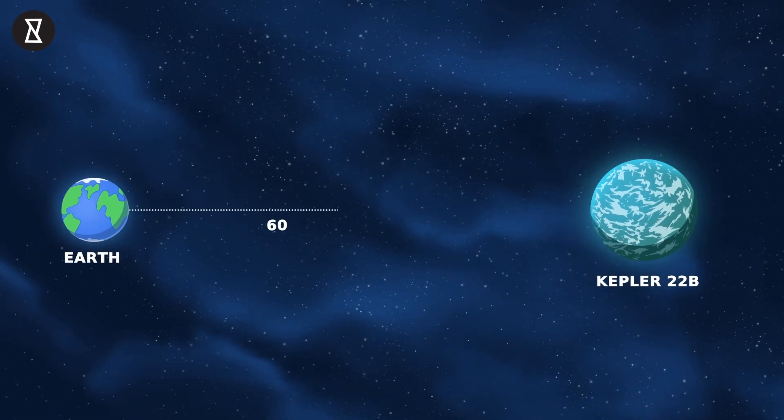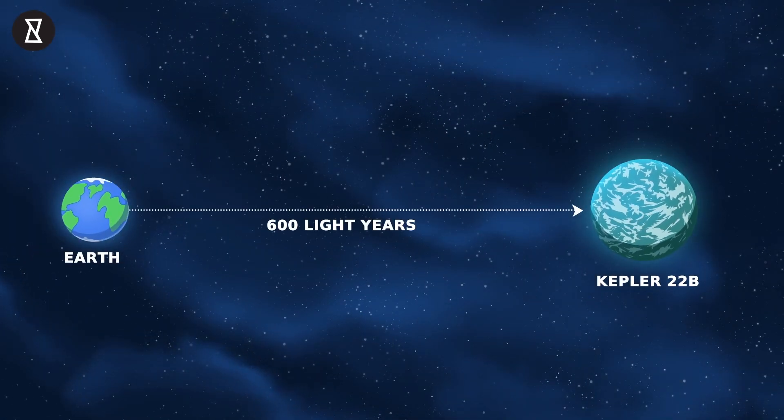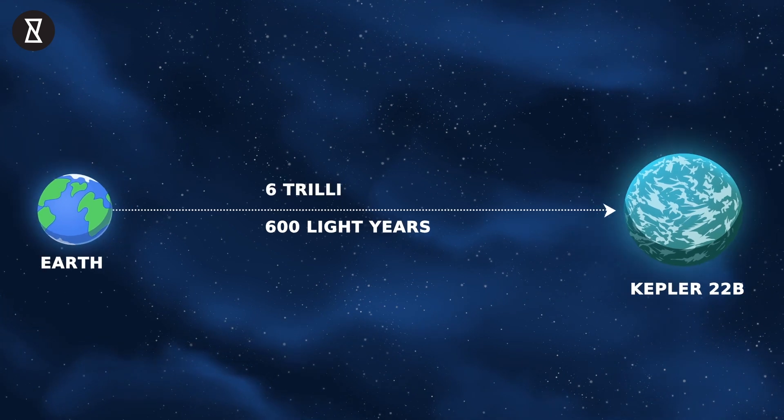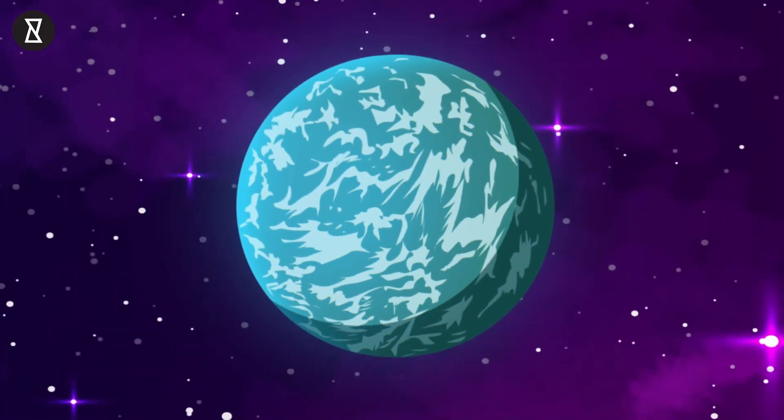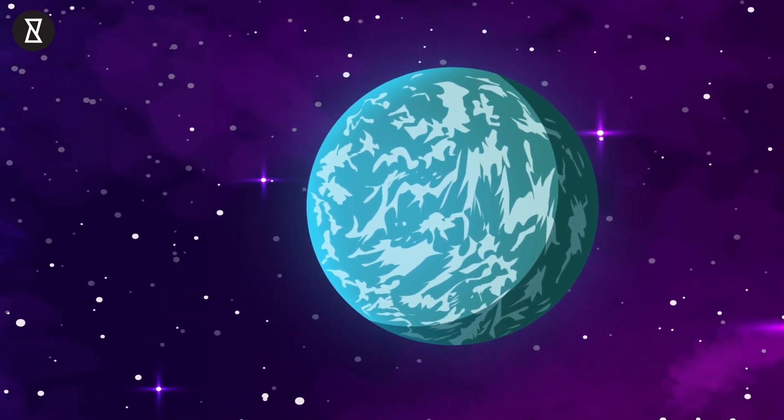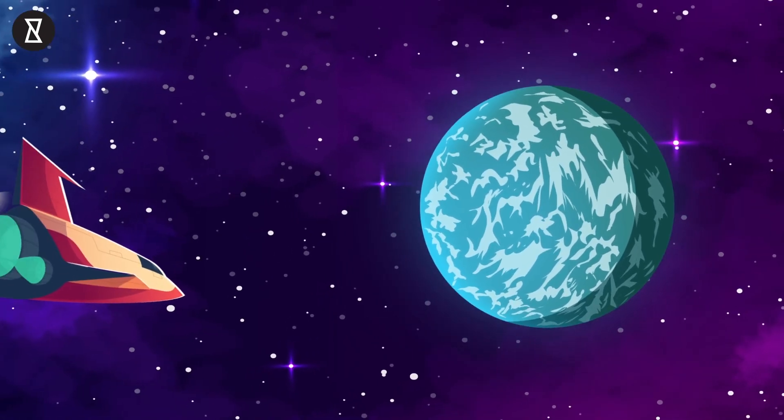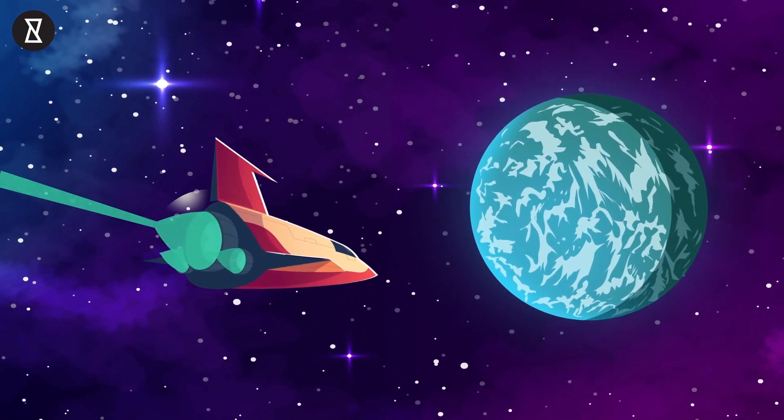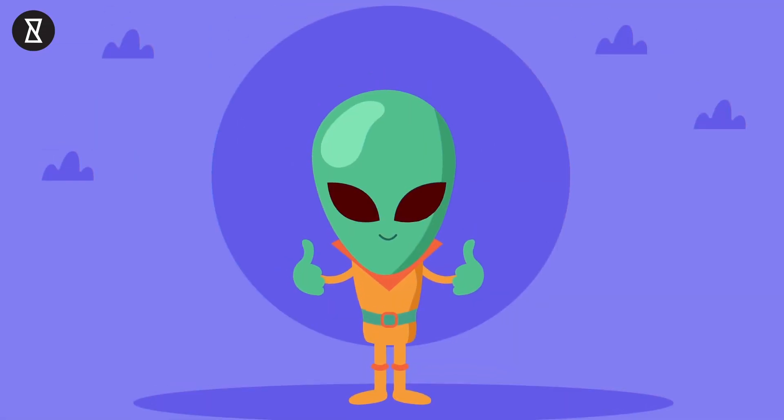Kepler 22b is approximately 600 light years away, which is roughly 6 trillion miles. But who knows, perhaps someday we'll have the chance to ask someone from an Earth-like planet with twice the gravity what life is like on their home planet. Perhaps they look something like this?